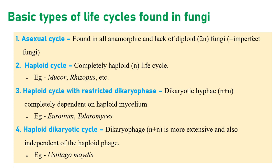In the asexual cycle, there is a complete lack of the teleomorphic or perfect stage. The diploid is restricted to somatic haploids. Fungi imperfecti and some perfect fungi like Penicillium come under this life cycle. Instead of sexuality, these fungi benefit from parasexual recombination — where plasmogamy, karyogamy, and meiosis do not occur at regular intervals in a specified manner. Parasexuality was first identified in Aspergillus nidulans by Pontecorvo and Roper in 1952.